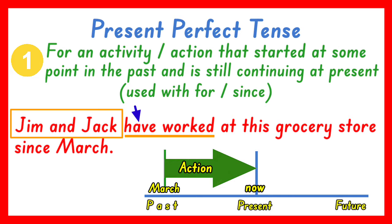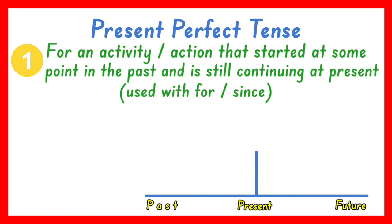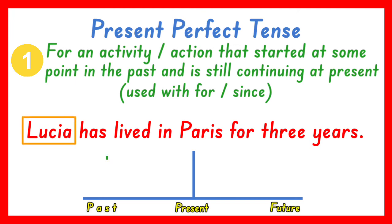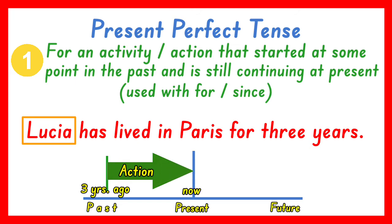Another example: Lucia has lived in Paris for three years and she is still living there now. That is why the present perfect tense has lived is used in this sentence, and has is used because the subject is singular — Lucia. Is it clear?